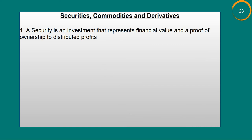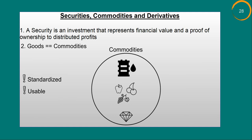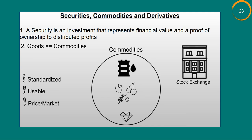Let's talk about commodities. Remember we started this course with the term goods? Commodities are nothing but goods. Oil, farm produce, and precious metals are some examples of commodities. To be considered a commodity, a good must be standardized, usable upon delivery, and at a price that can create a market for it. Just like stocks, bonds, and securities, commodities are also traded on stock exchanges.